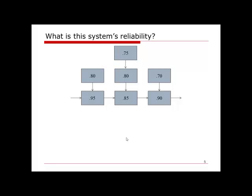Let's look at a more complicated system and see how to calculate its system reliability. This example has both serial and parallel structures. For a complicated system like this, the key is to identify the subsystems of the original system so we can calculate each subsystem's reliability first, and then use those subsystem reliabilities to calculate the overall system reliability.